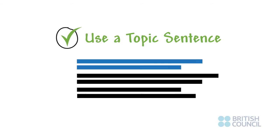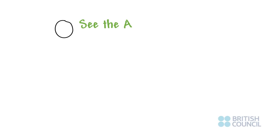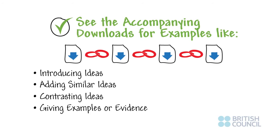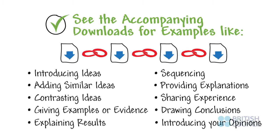Connect and show the relationship between your paragraphs and sentences by using a wide range of linking words or phrases appropriately. See our accompanying download for different examples. They are usually these types: introducing ideas, adding similar ideas, contrasting ideas, giving examples or evidence, explaining results, sequencing, providing explanations, sharing your experience, drawing conclusions, and introducing your opinions.